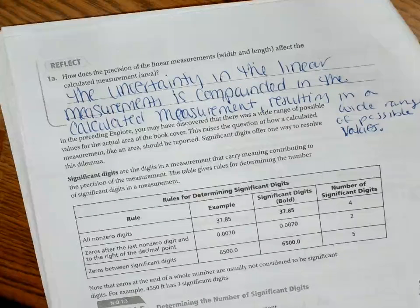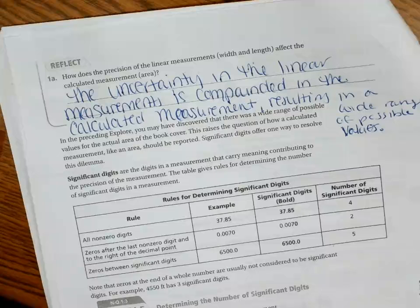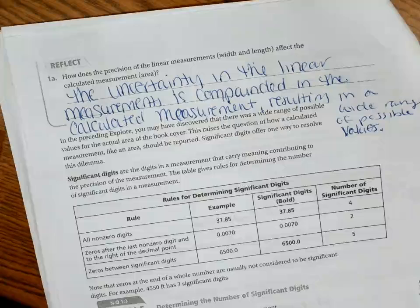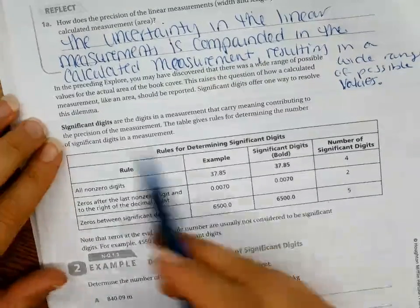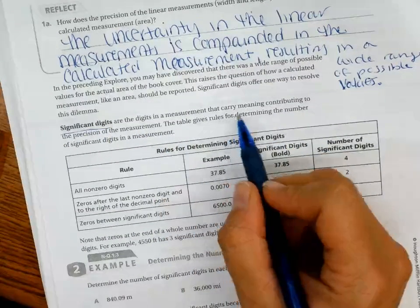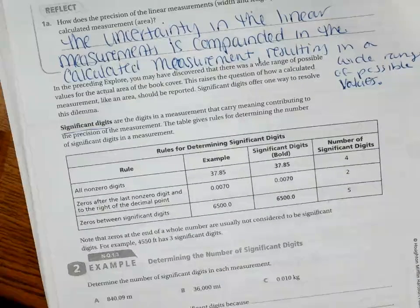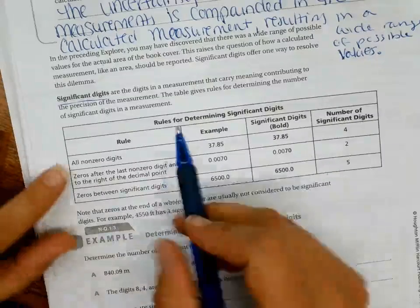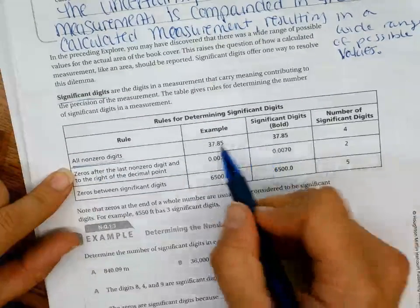Alright, so in the preceding explorer, we have discovered that there are a wide range of possible values for the actual area of the book cover. This raises the question of how a calculated measurement, like an area, should be recorded. Significant digits offer one way to resolve this dilemma. Significant digits are the digits in a measurement that carry meaning contributing to the precision of the measurement. This table gives rules for determining the number of significant digits in a measurement.